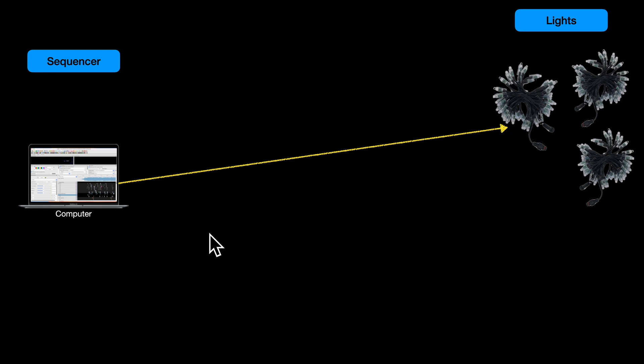This video is for people who are brand new to the hobby of sequencing Christmas lights using a product called xLights. It's for absolute beginners and it's to make you aware of the terminology, a lot of the terminology that's used and how they hang together.